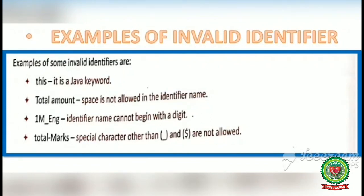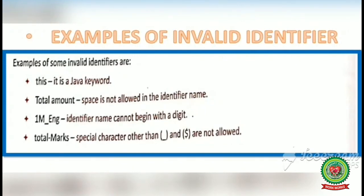Number 3: '1M_ENG' — although it has an underscore in between, it is invalid because it starts with a digit. Identifier names cannot begin with a digit. Number 4: 'total-marks' — a hyphen sign is not allowed. Only the dollar sign or underscore are allowed as special characters. Any other special characters like ampersand, asterisk, percentage, or hash are not allowed in an identifier.